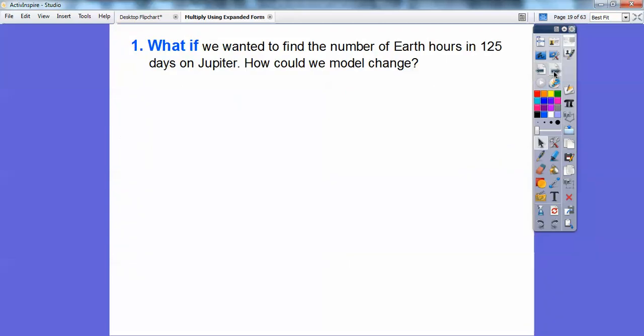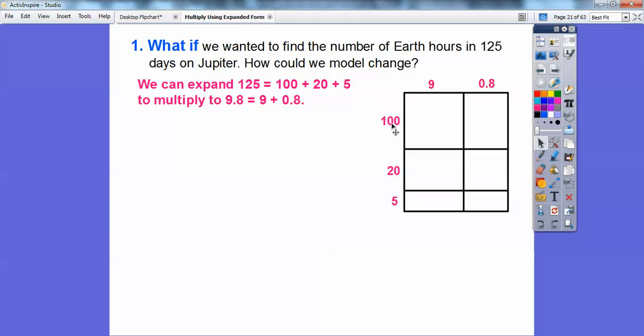What if we wanted to find the number of Earth hours in 125 days on Jupiter? How could we model this change right here? Well, we can expand the 125 to be 100 plus 20 plus 5. And so this would give us 3 lengths on a rectangle. 9.8 is 9 plus 0.8. So here it is right here. Here's the 100 plus 20 plus 5. Here's 9 plus 0.8. And we just go ahead and start multiplying.